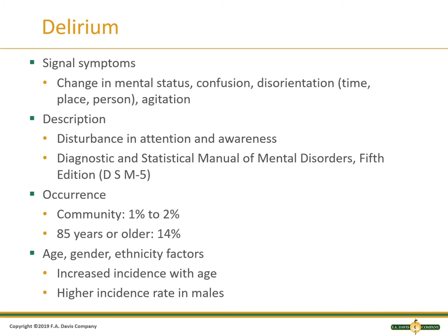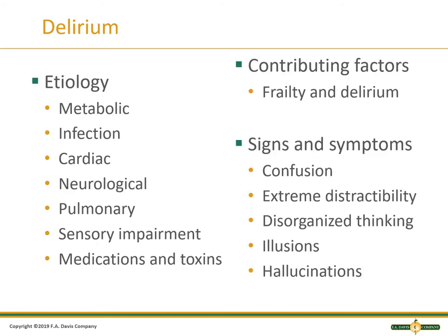The description of delirium is a disturbance in the attention and awareness. There is a DSM-5 code for this. The occurrence is usually about 14% in those 85 years or older. We see an increased incidence with age, higher incidence in males. This could be metabolic, infectious, cardiac, neuro, pulmonary — all these different things. It could be secondary to medications, toxins, or exposures.